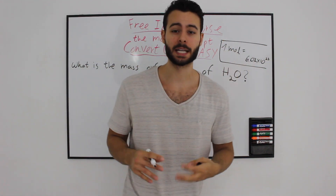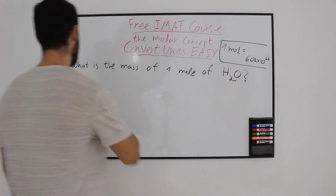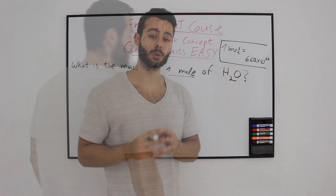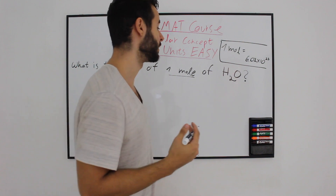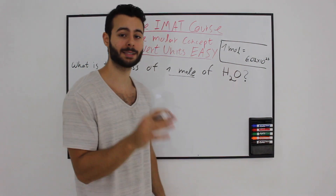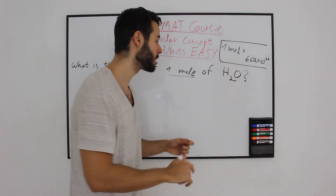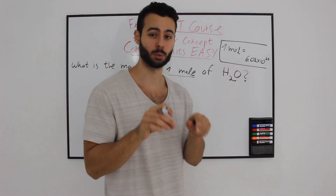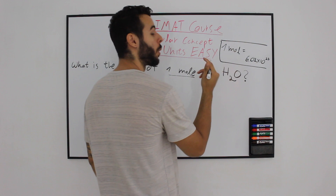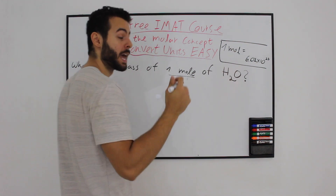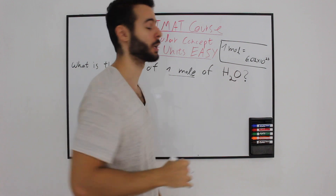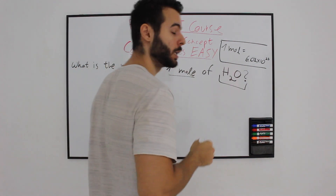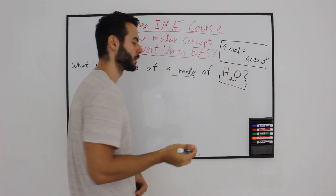Let's try to solve a very simple question to understand the basics. What is the mass of one mole of H2O, which is of course water? Using the periodic table, which I will talk about in later videos, you will have to memorize several atoms' molar mass, oxidation state, and other properties. Today we are going to solve for H2O: one hydrogen equals about one gram per mole.